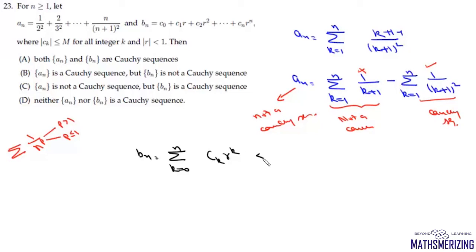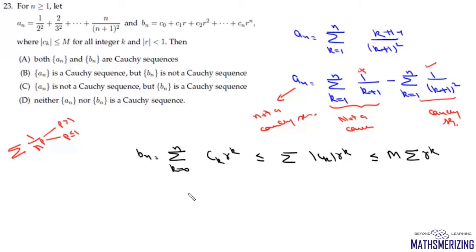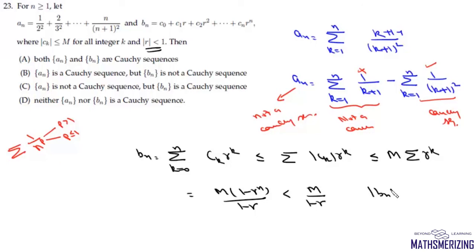This will always be less than or equal to the summation of |cₖ| · rᵏ, which is less than or equal to m times the summation of rᵏ. So it becomes m · (1 − rⁿ)/(1 − r). Since r lies between −1 and +1, this is less than m/(1 − r). So |Bₙ| is less than m/(1 − r).